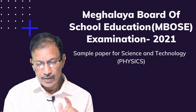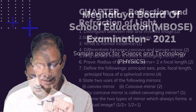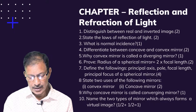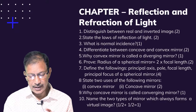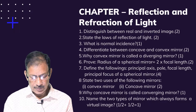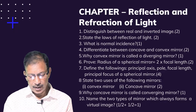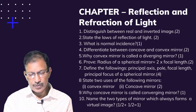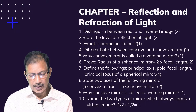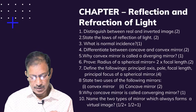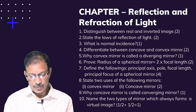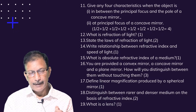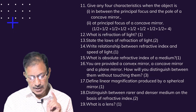Let's start from the chapter Reflection of Light. Distinguish between real and inverted image — marks are given on the right side. State the laws of reflection of light. What is normal incidence? Differentiate between concave and convex mirror. Why is a convex mirror called a diverging mirror? Prove that the radius of a spherical mirror equals two times the focal length. Define the following: principal axis, pole, focal length, and principal focus of a spherical mirror.